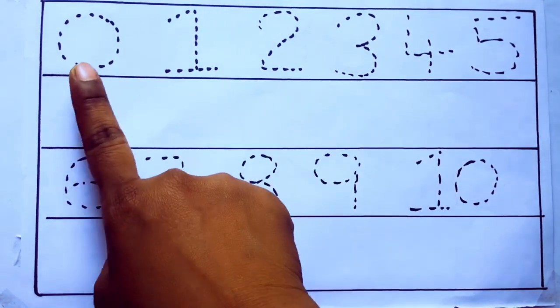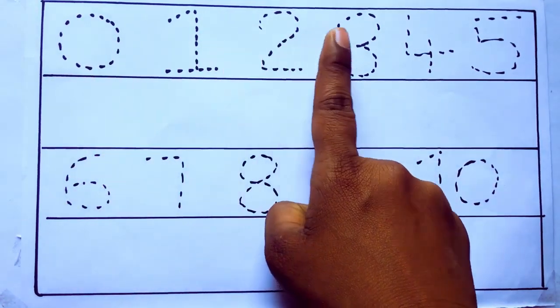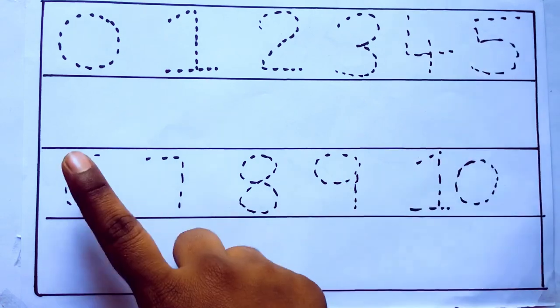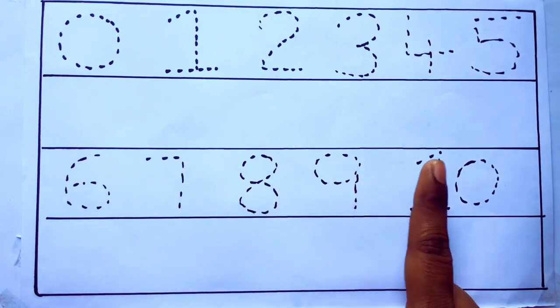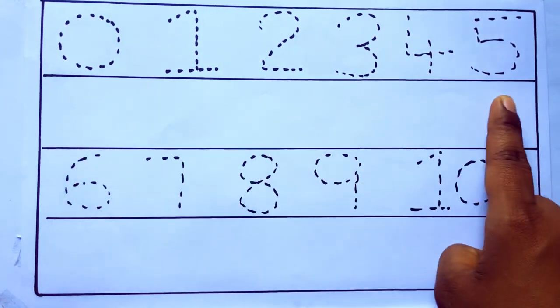0 to 10: 0, 1, 2, 3, 4, 5, 6, 7, 8, 9, 10, and rewriting the numbers.